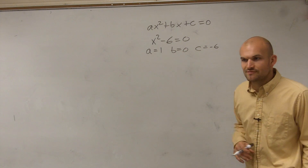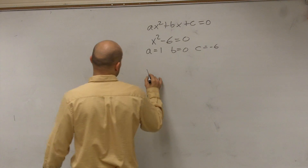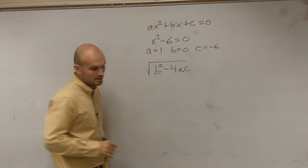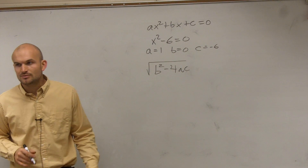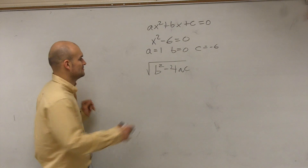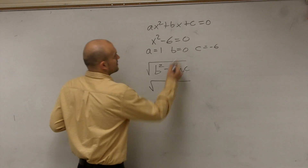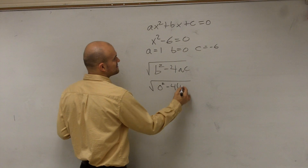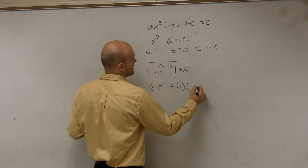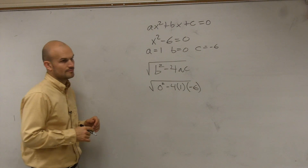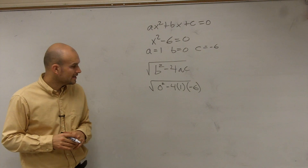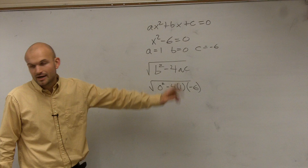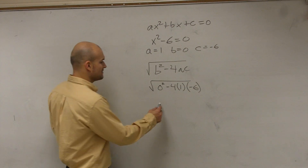Now let's go and find the discriminant. The discriminant is b squared minus 4 times a times c. So all you're going to do is plug in the numbers: 0 squared minus 4 times 1 times negative 6. So 0 squared is 0, negative 4 times 1 is negative 4, and negative 4 times negative 6 is positive 24.